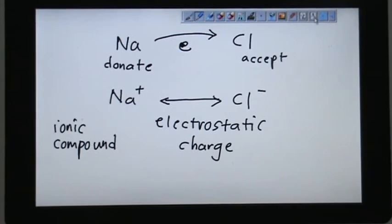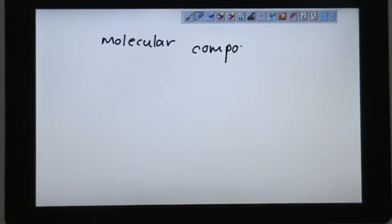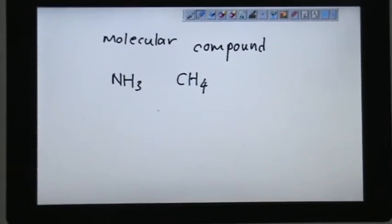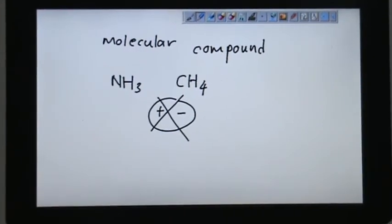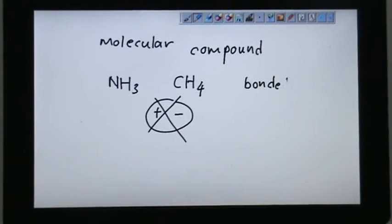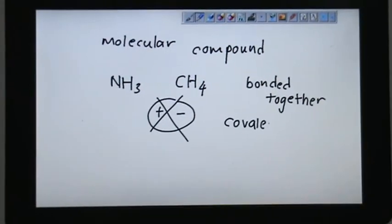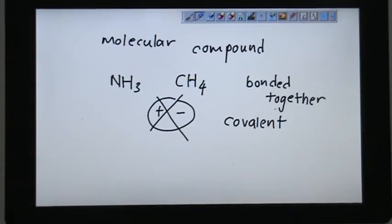Other types of compound is molecular compound. We have substances like NH3, we have substances like CH4. All these are not attracted to each other due to the positive or negative charge. They are bonded together through a method called covalent bonding. This one will explore more in later chapters when we study how different elements, they bonded together through sharing of the outermost orbital electrons. They share, they don't donate, they don't accept, but they share. We'll find out more later.